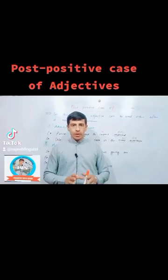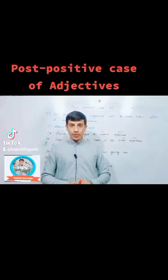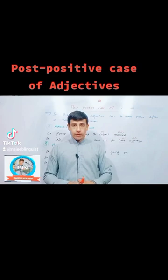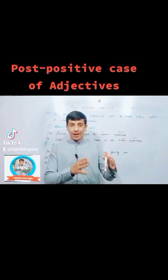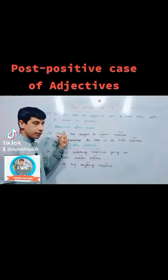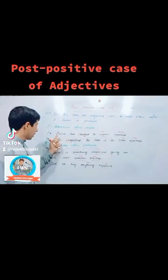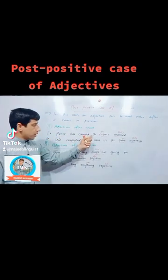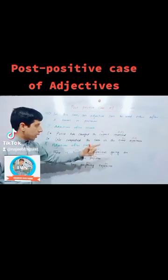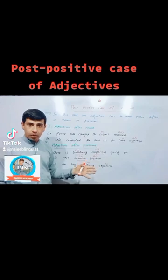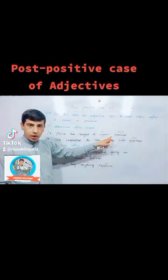Today's lecture is about the post-positive case of adjectives. In this case, an adjective is used after either a noun or pronoun. For instance, adjectives after nouns — example number one: 'police has caught the culprit involved.' Here, 'involved' is an adjective and 'culprit' is a noun, so this adjective has been used after the noun 'culprit.'